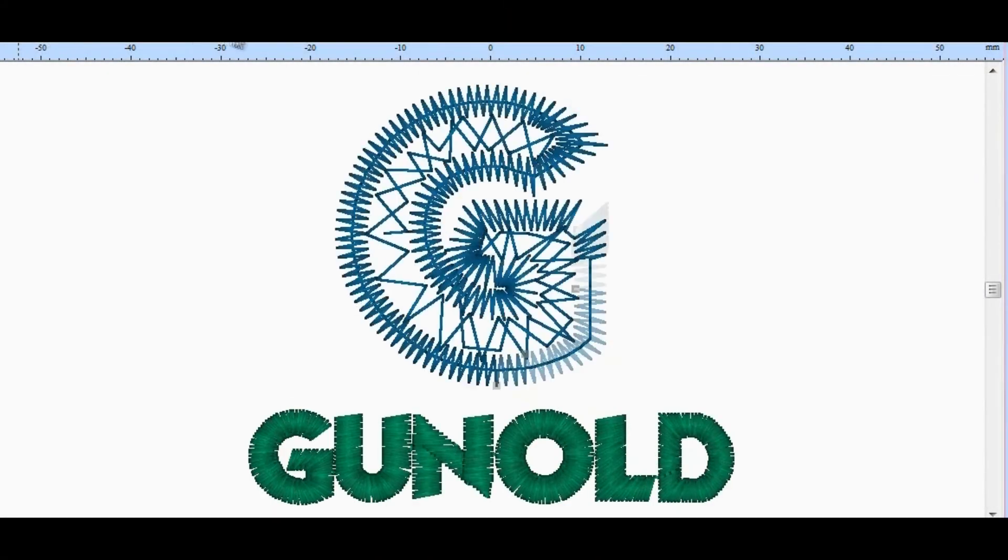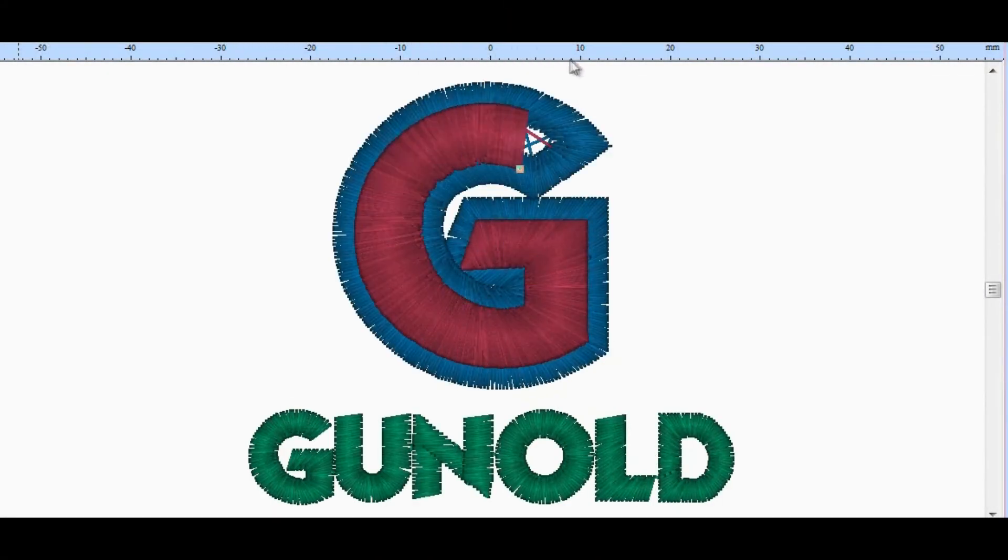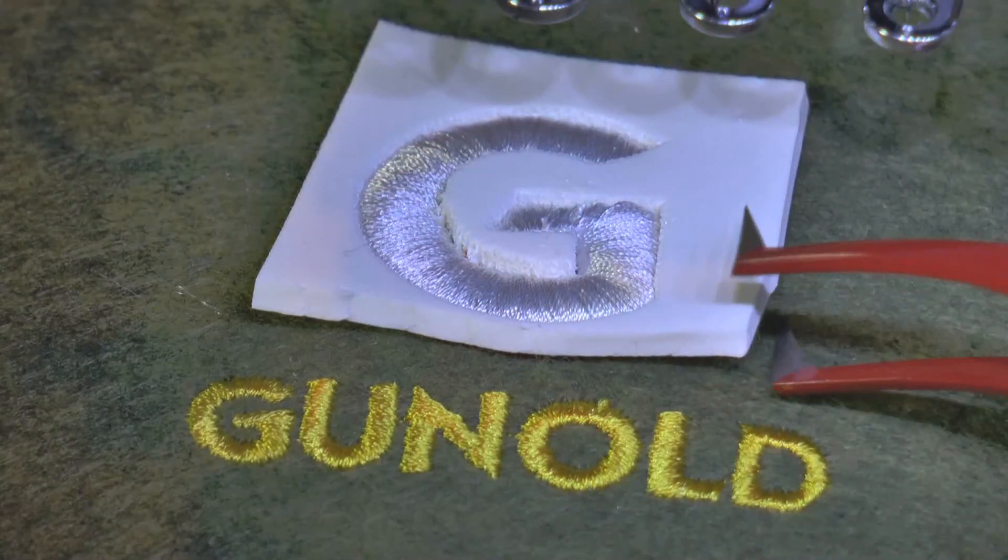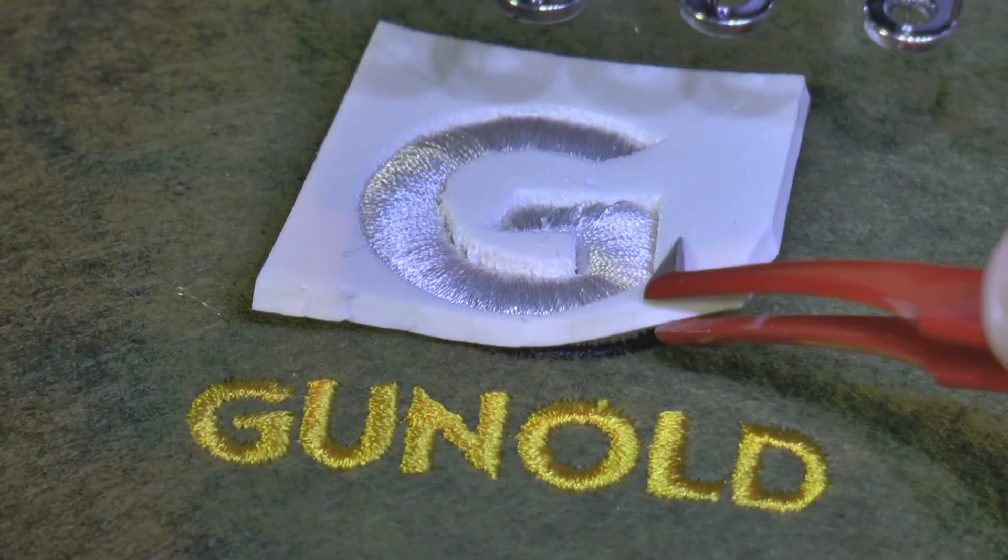The puffy portion of a design can appear at the beginning, middle or end of the design. Regardless when it is stitched, stop the machine after the puffy portion has stitched and lift away the excess.